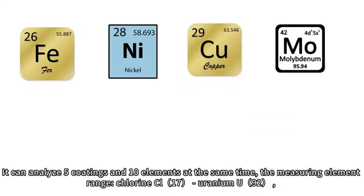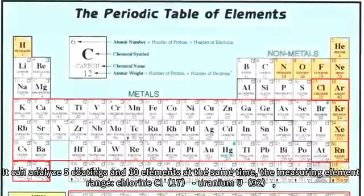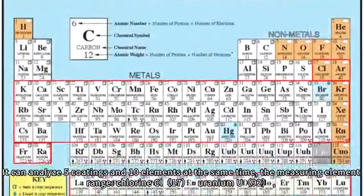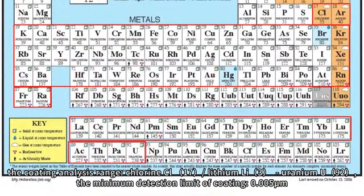It can analyze 5 coatings and 10 elements at the same time. The measuring element range is chlorine (Cl) to uranium (U), and the coating analysis range is chlorine (Cl), lithium (Li), to uranium (U).